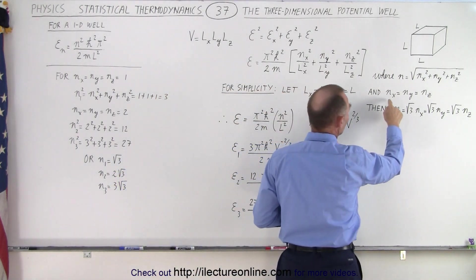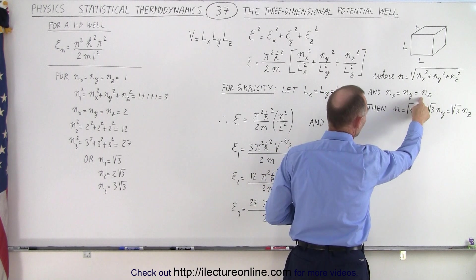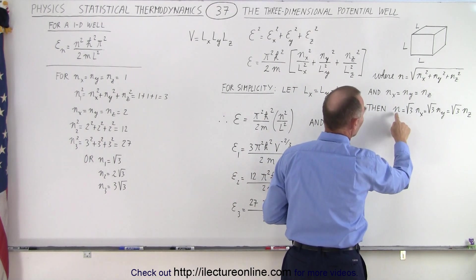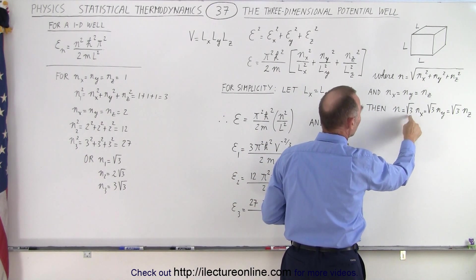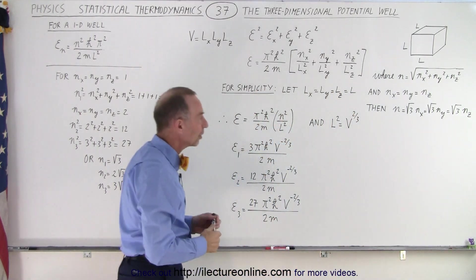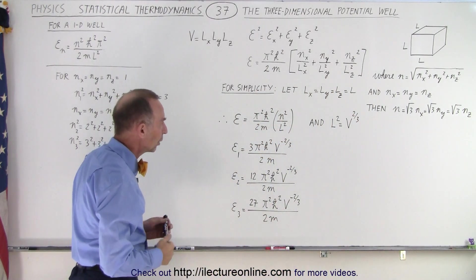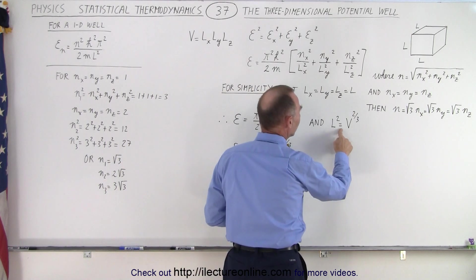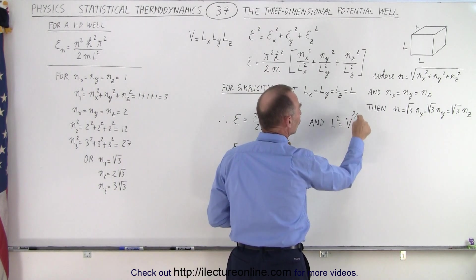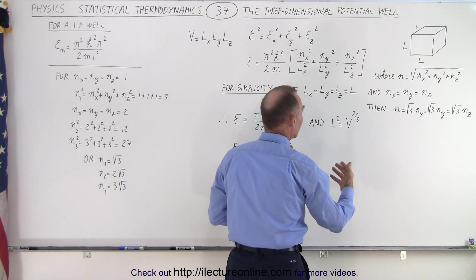And for simplicity, now let the lengths of the box be the same, so we end up with a cube. And notice we can also set n sub x equal to n sub y equal to n sub z, again for simplicity, so that n is simply equal to the square root of three times n of one of the n's in either one of the three directions. We can also then assume that l squared is equal to the volume to the two-thirds power. That's one way to express it.